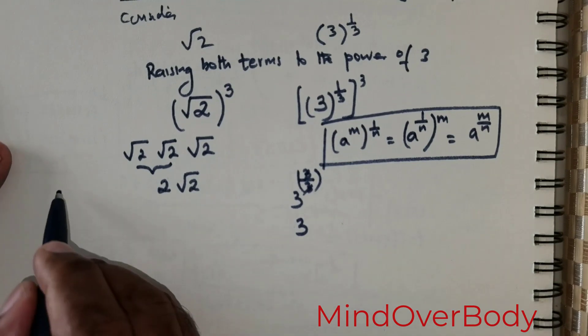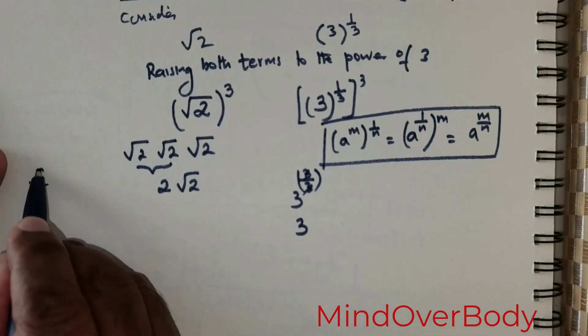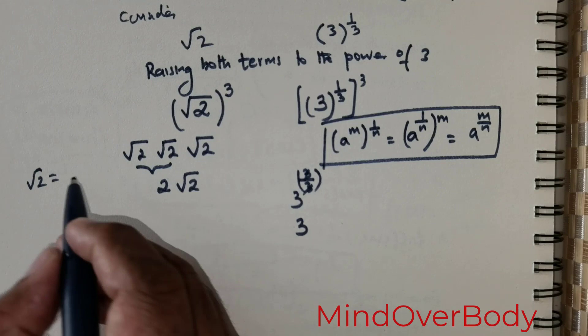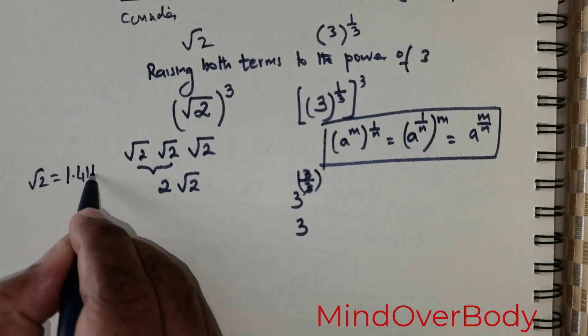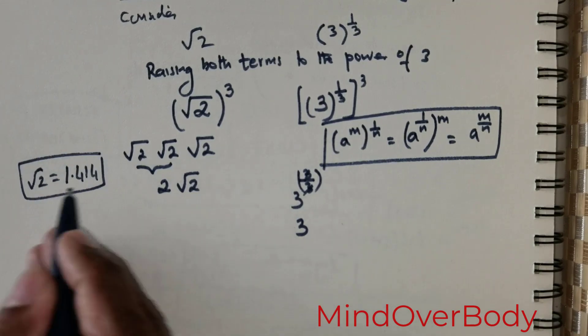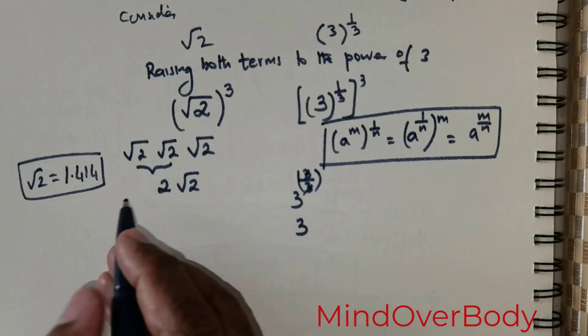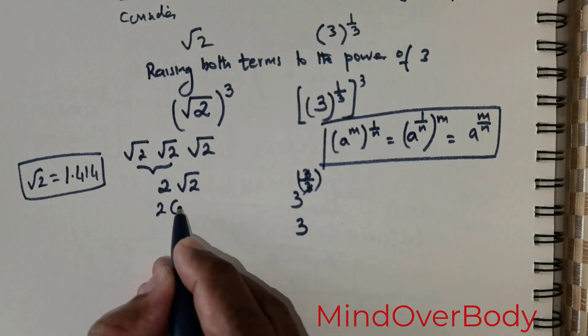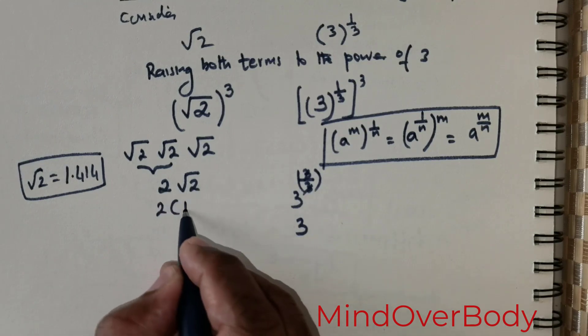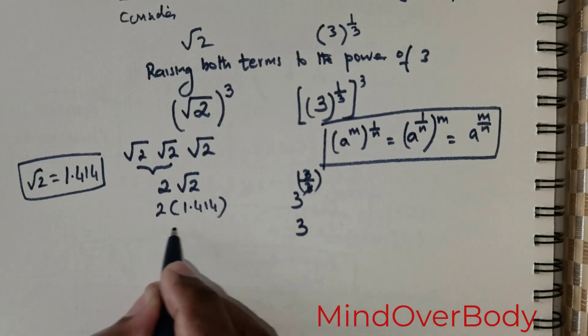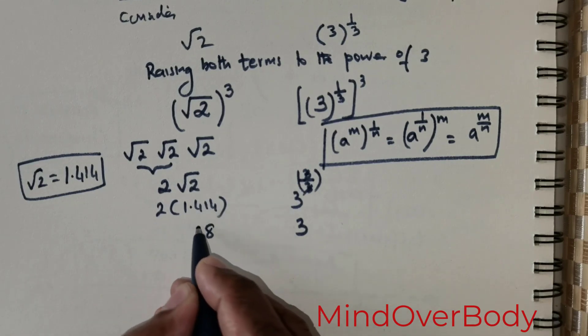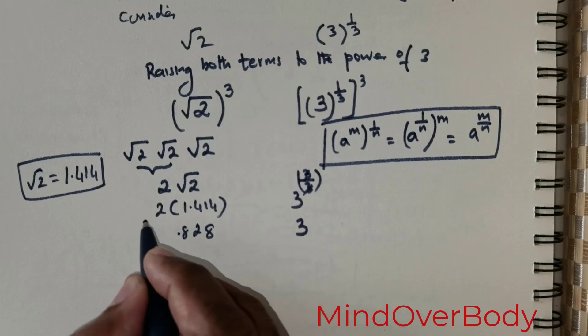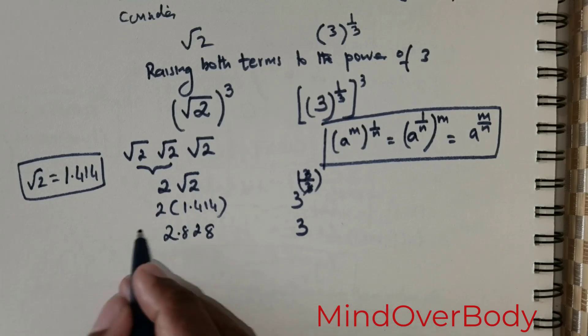Now we know that root of 2 as formed by Archimedes is 1.414. This is the basic value. Of course it stretches on. Now I am going to substitute that value here. So 2 times root of 2 is 1.414. I multiply this. This is going to be 2 times 4 is 8, 2 times 1 is 2, 2 times 4 is 8, decimal point 2 times 1 is 2. So this is what I get, 2.828.